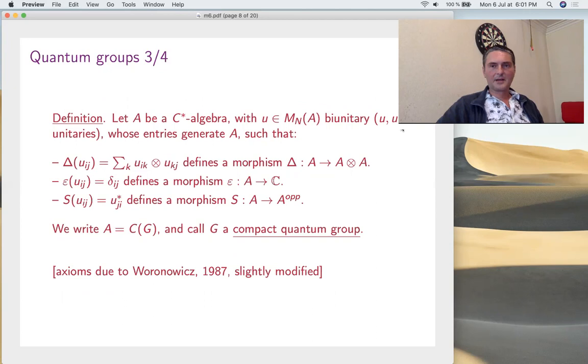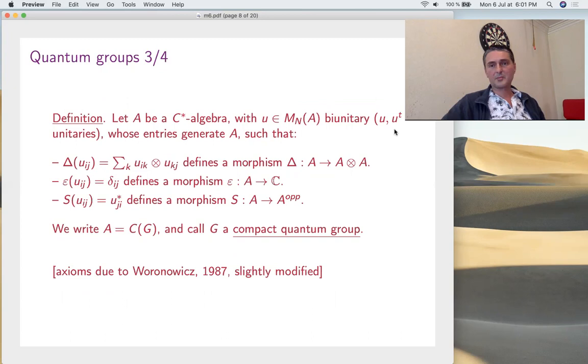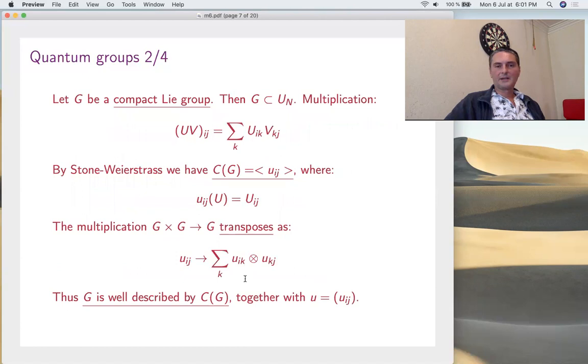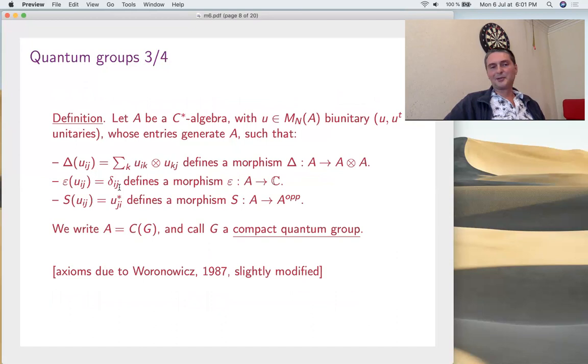For this, we'll first look at the classical case. Just take a compact Lie group, that's actually a group of matrices. Multiplication is the multiplication of matrices. Now let's try to express everything in terms of C of G, in terms of functions, because this is a C* algebra. By Stone-Weierstrass, this algebra is generated by the coordinates. The multiplication goes from G tensor G cross G to G. So at the level of functions, you get something from C of G to C of G tensor C of G. The formula is just take the above formula here, you have another tensor here in the middle. So finally, G with its multiplication is perfectly described by this algebra C of G. It's just generated by coordinates. That's the formula of the whole multiplication on the coordinates.